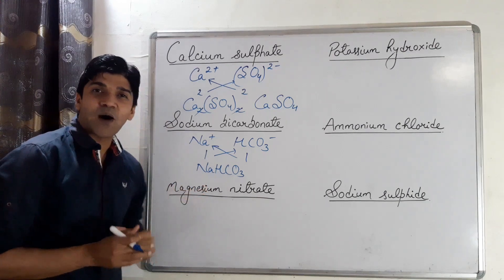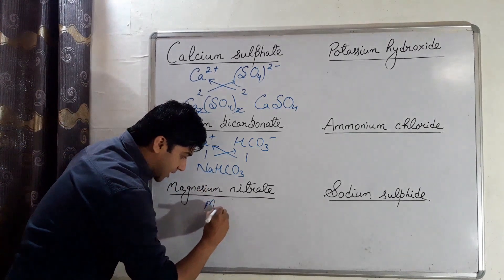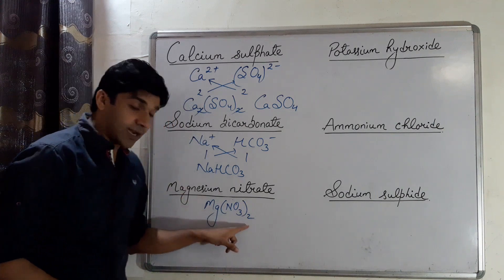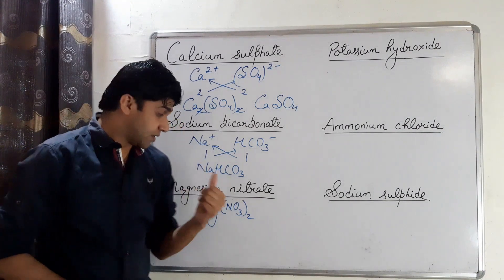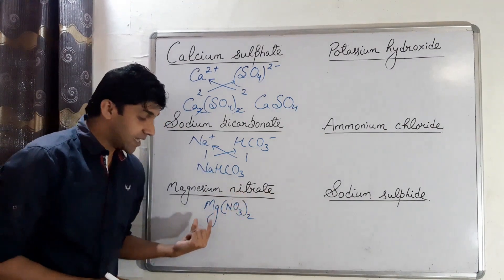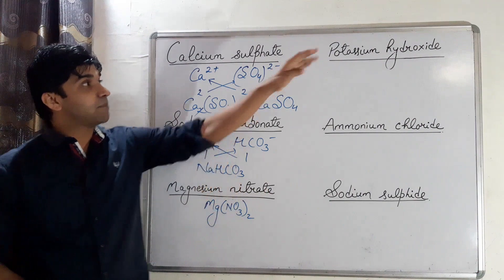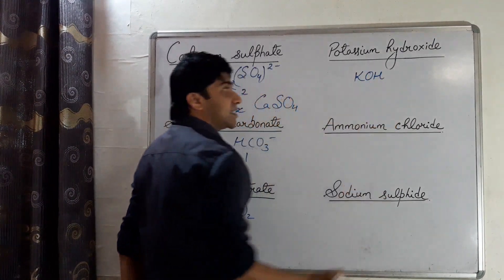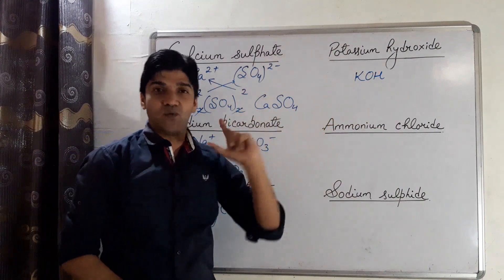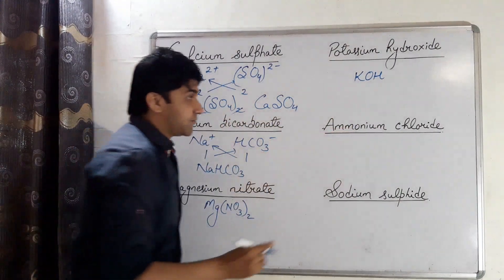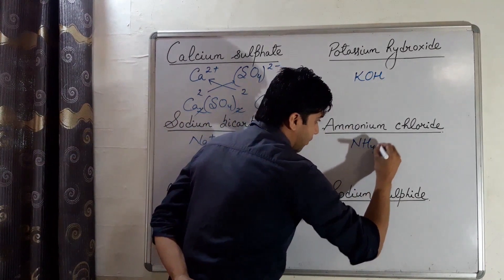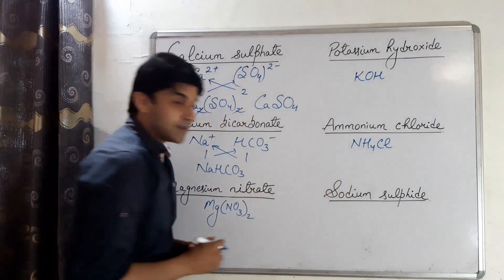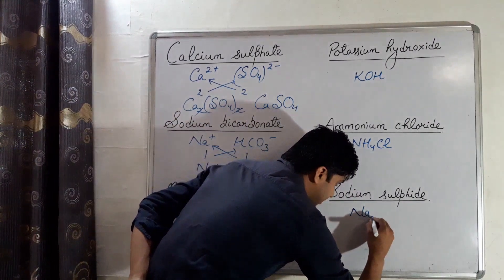The chemical formula of magnesium nitrate is Mg(NO₃)₂ — valency of magnesium is 2 and valency of nitrate is 1. Potassium hydroxide is KOH — valency of both potassium and hydroxide is 1. Ammonium chloride is NH₄Cl. Formula of sodium sulfide is Na₂S — valency of sulfide ion is 2 and valency of sodium ion is 1.